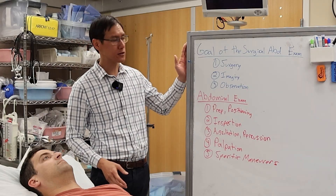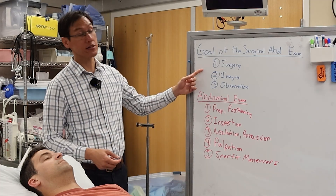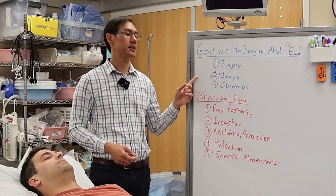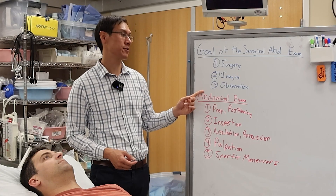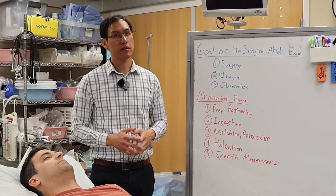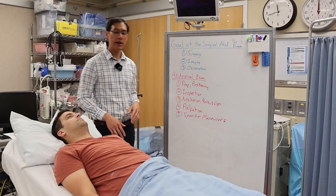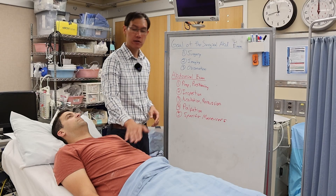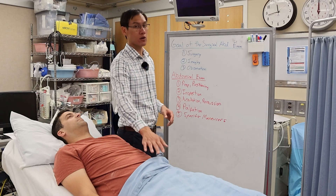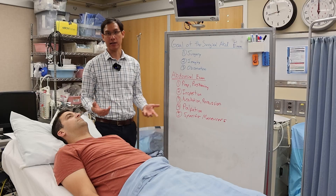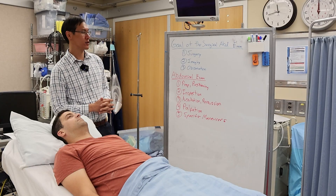What are the goals of the surgical abdominal exam? As a surgeon, when you assess the patient, you have three things in mind. One, does this patient need surgery? Two, does this patient need imaging? Three, if neither, are they okay for just observation? Imaging is extremely important because the abdominal exam helps focus what type of imaging you need. For example, right upper quadrant pain is best assessed with ultrasound, whereas right lower quadrant pain is best assessed with a CT scan.